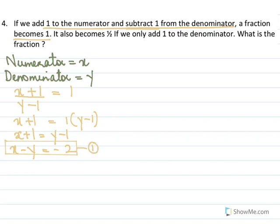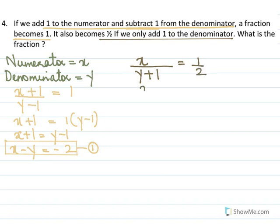The second part says it becomes half if we add 1 to the denominator only — the numerator is unchanged. So x over (y plus 1) equal to 1 by 2. Cross multiplying and bringing all x and y terms together gives the second equation.